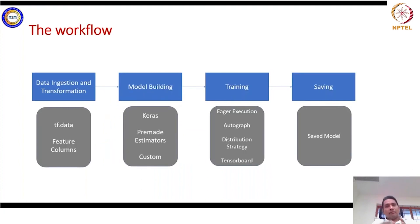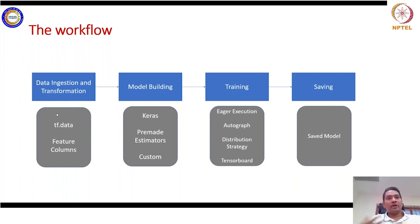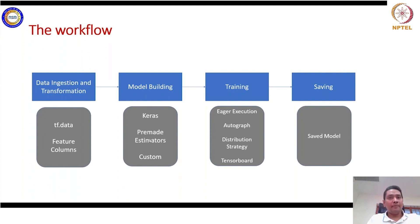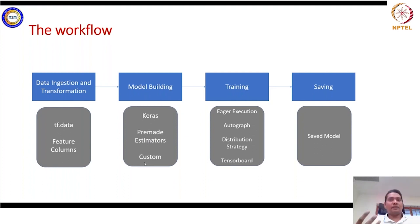The workflow is similar to that of PyTorch. You feature engineer your data, transform and normalize it, and then define and build the model. You can use Keras — estimators are not recommended after TensorFlow 2.5. Keras has most of the models, approximately 90% of what is necessary to build your models. You can also use custom model building APIs if you want more control over model building.